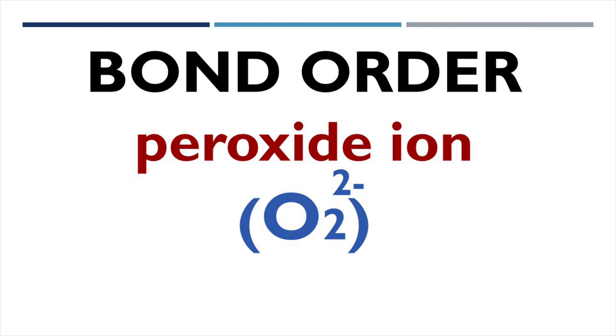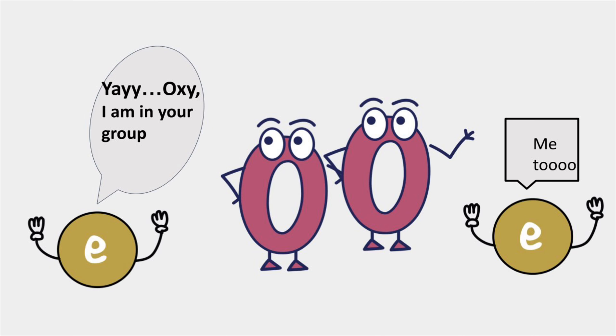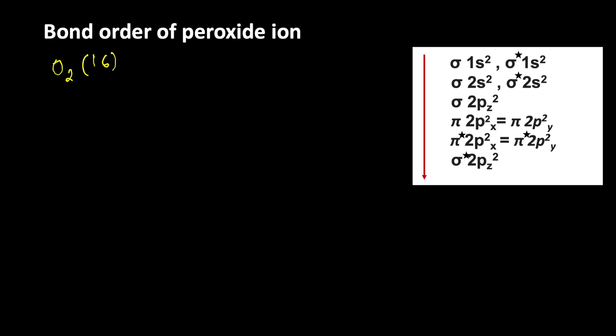Peroxide ion is formed when oxygen molecule gains two electrons. Oxygen atomic number 8, so there are 16 electrons present in oxygen molecule. When it gains two electrons it is converted into peroxide ion O2 2-. So the total number of electrons present in peroxide ion is 18.